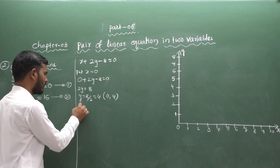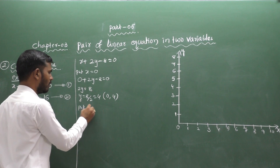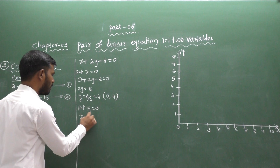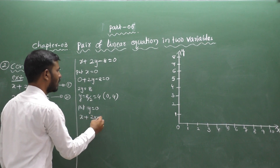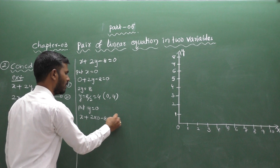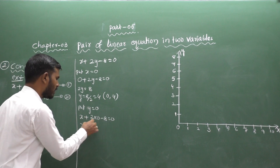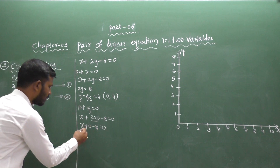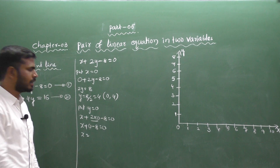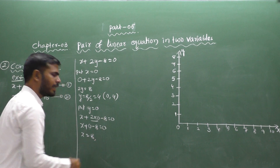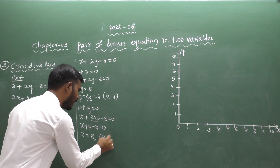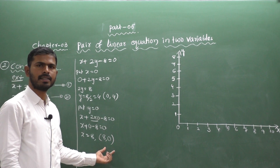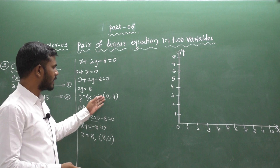Next, put y equal to 0. Substituting into x plus 2y minus 8 equal to 0: x minus 8 equal to 0, so x equal to 8. Therefore the second solution set is (8, 0). So we have first set (0, 4) and second set (8, 0).